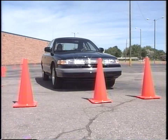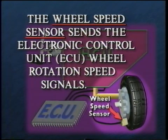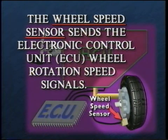The first review question is: what component sends wheel rotation speed signals to the electronic control unit? The correct answer is that the wheel speed sensor sends the electronic control unit wheel rotation speed signals. If you answer differently, please review part one of this video.